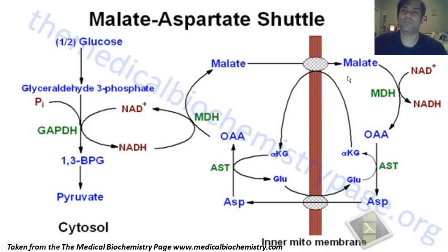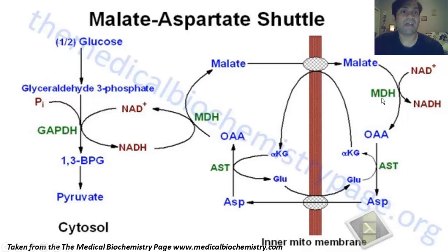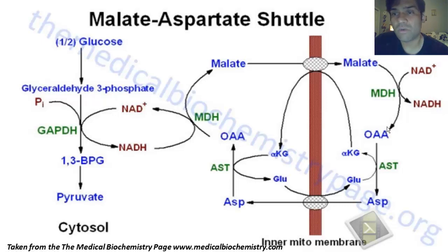Let's first begin with this reaction that we should be familiarized with from studying the TCA cycle, and that is the conversion of malate to oxaloacetate. That is catalyzed by malate dehydrogenase. It's the last reaction in the TCA cycle before oxaloacetate reacts with acetyl-CoA and starts the process over again.